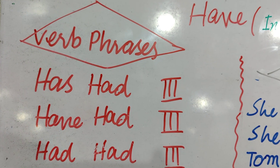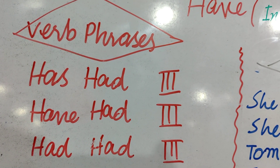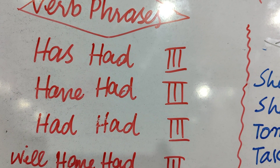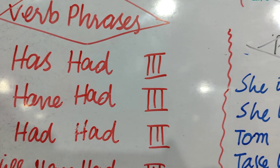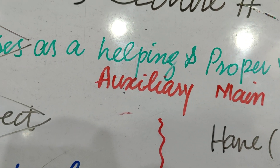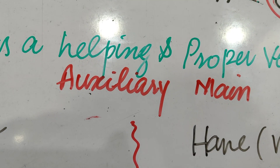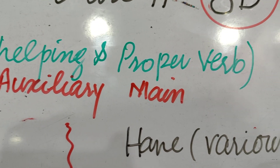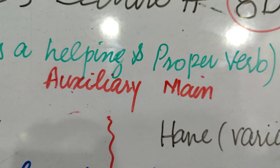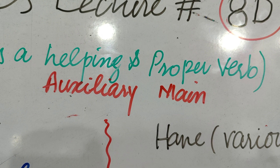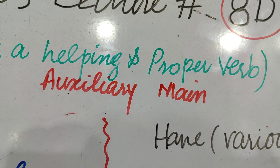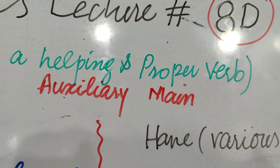Sometimes the students can't understand کہ has کے بعد had کیسے آ گیا اور have کے بعد had کیسے آیا، یا had کے بعد had کیسے آیا۔ میں بتانا چاہوں گا کہ have کو آسان طریقے سے سمجھیں: پہلا have جو ہوگا وہ auxiliary یعنی helping verb ہوگا اور دوسرا have جو ہے وہ main verb ہوگا، base verb ہوگا۔